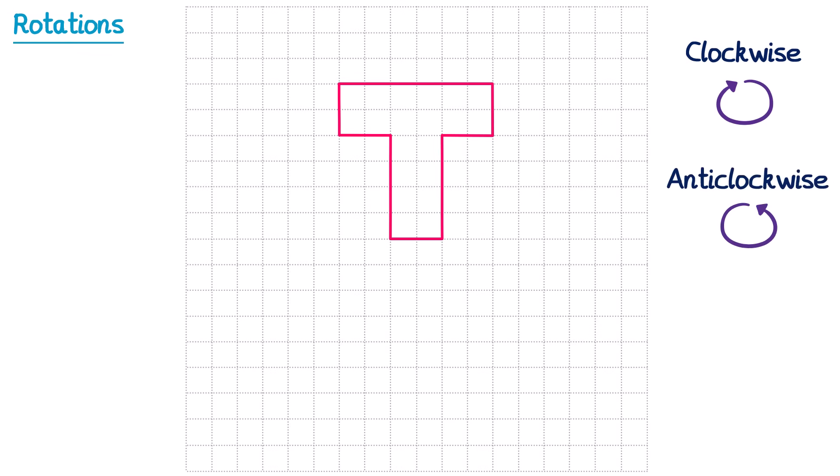For this video, we're going to look at rotating a shape by either 90 degrees or 180 degrees. Since one full turn is 360 degrees, 180 degrees will be half a turn, and 90 degrees will be one quarter of a turn.